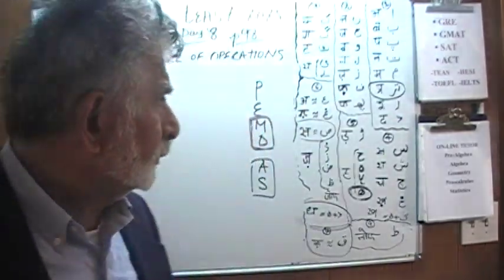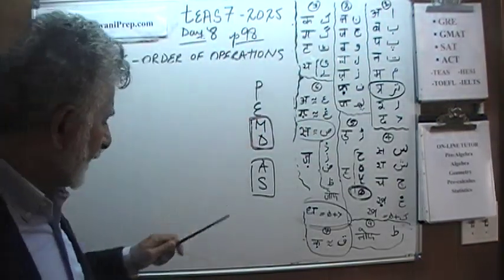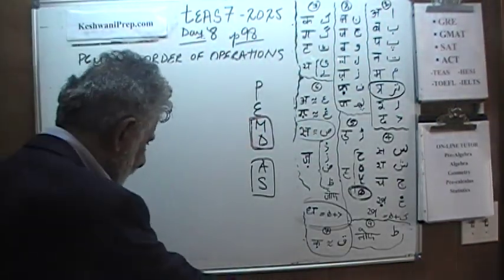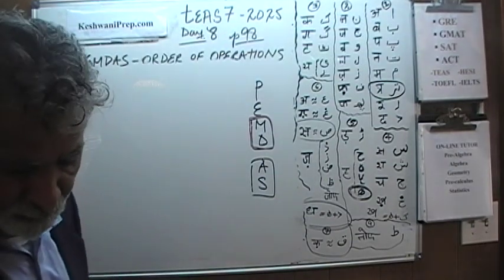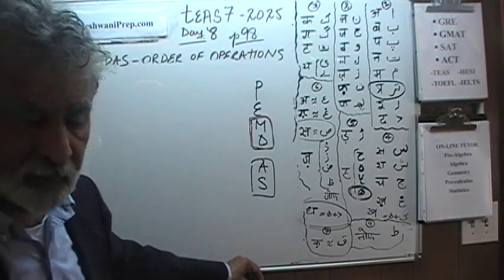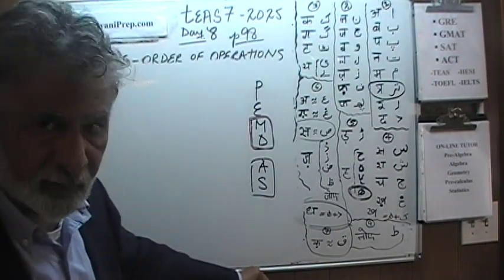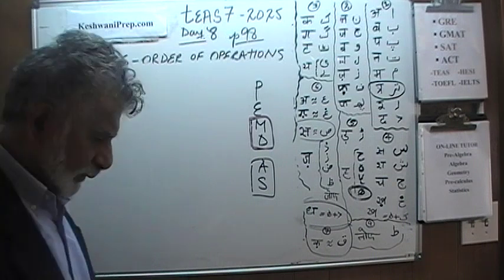Today is our lesson number 8. We are on page number 98. On page number 98, on the bottom of the page, there are 5 practice problems. We did number 1 already last time. We are going to pick up from number 2. Here we go.